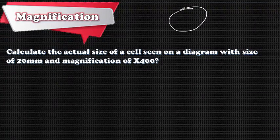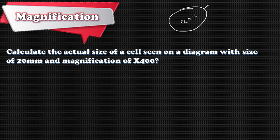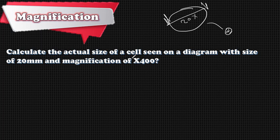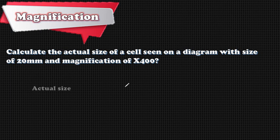Sometimes you are given how many times bigger something looks — for example, 20 times bigger — and you know the image size, but you want to find the actual size. Here is an example: calculate the actual size of a cell seen on a diagram with an image size of 20 millimeters and a magnification of 400. The rule says: actual size equals size of image over magnification.